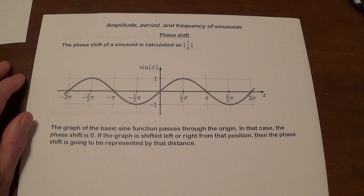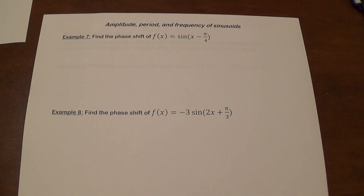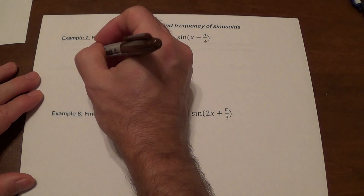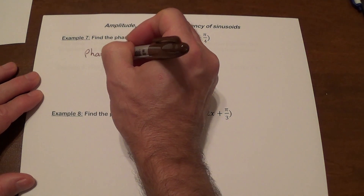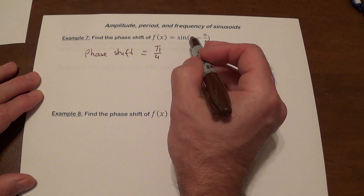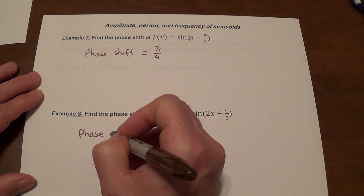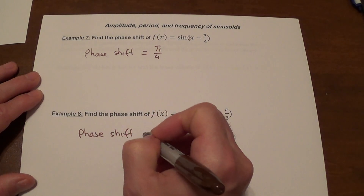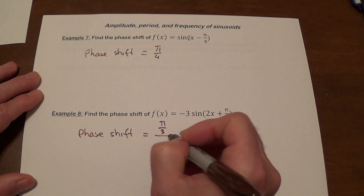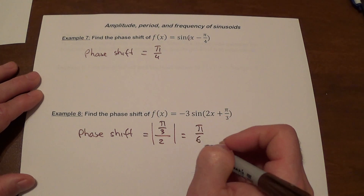Looking at a couple of examples: for the first function, the phase shift is π over 4 — we're dividing π over 4 by 1, so it's just π over 4. For the second function, the phase shift is π over 3 divided by 2; since both numbers are positive we take the absolute value, giving us π over 6.